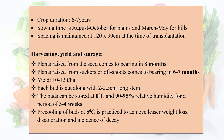Plants raised from seeds come to bearing in 8 months after sowing. Plants raised from suckers or offshoots come to bearing in 6 to 7 months. The yield is 10 to 12 tons per hectare. Each bud is cut along with a 2 to 2.5 cm long stem.